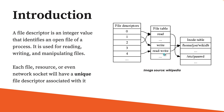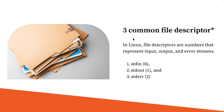The file descriptor in most modern operating systems will have common values like this: standard input has a file descriptor of 0, standard output has a file descriptor of 1, and standard error has a file descriptor of 2. This is how the file descriptor looks in most common modern Linux operating systems.